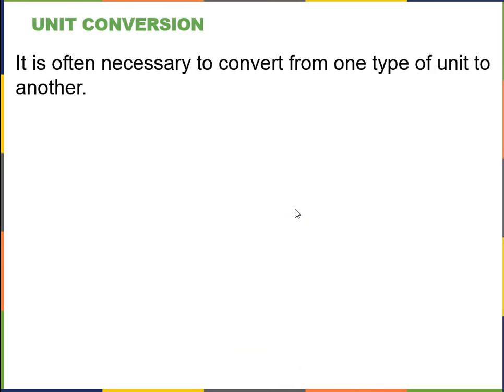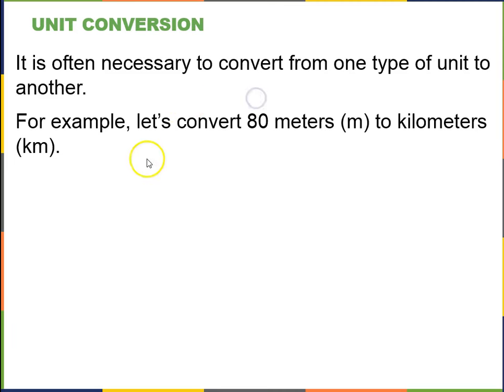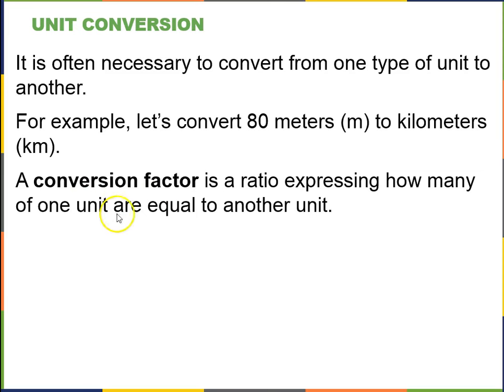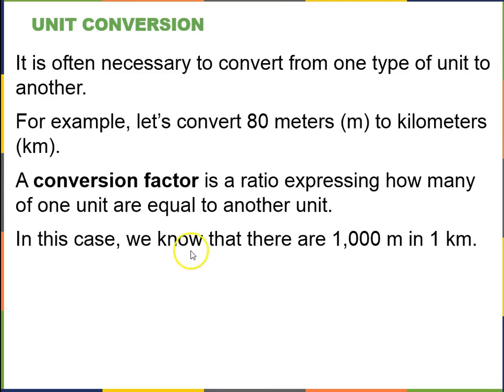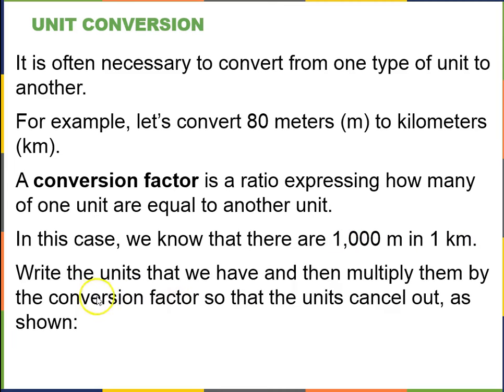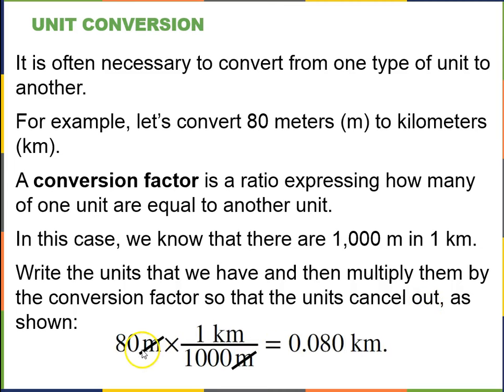So sometimes we have to convert from one unit to another unit. For example, we might want to convert 80 meters to kilometers. Well, you can use a conversion factor, which is a ratio expressing how many of one unit are equal to another unit. So we're going from meters to kilometers. We know that there's 1,000 meters in one kilometer. So you can write the units that we have and then multiply them by the conversion factor so that the units cancel out.